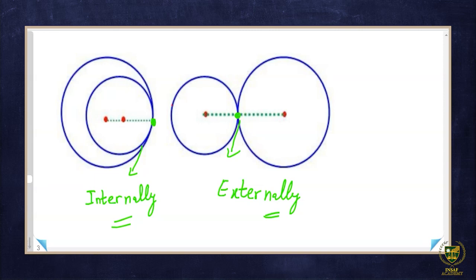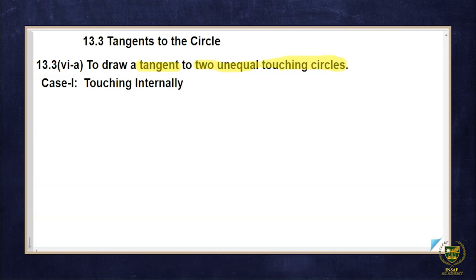Since we are talking about the tangent at the point of contact, we know the result: the tangent is perpendicular at the point of contact. It means we have to construct a 90-degree angle at both points of contact. We will continue with this concept and complete the new figure. Let's move to the first case.